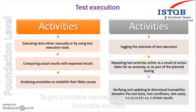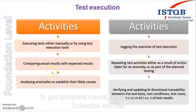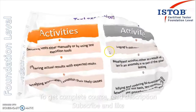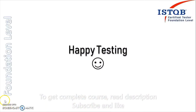So those six points cover test execution activities. To summarize: first, execute test cases manually or automatically; compare results; analyze anomalies; log outcomes; repeat activities depending on the anomaly; and finally, check bi-directional traceability. That is it for this topic on test execution. I will see you in the next video. Until then, happy testing.